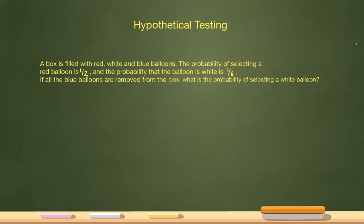Let's take this problem over here for example. A box is filled with red, white, and blue balloons. The probability of selecting a red balloon is one-half.